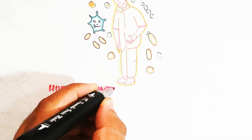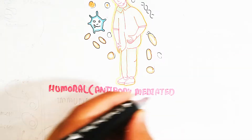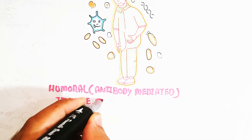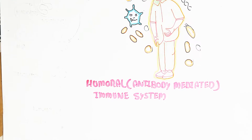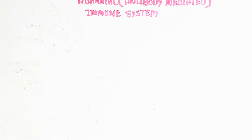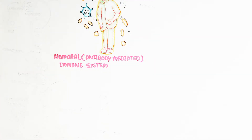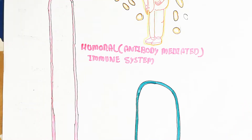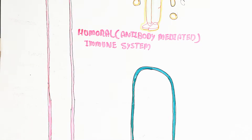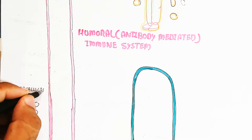First we will discuss humoral immunity — also called antibody-mediated immunity. Humoral immunity depends on antibodies, not on cells directly, which is what distinguishes it from cell-mediated immunity.